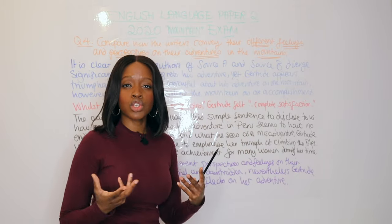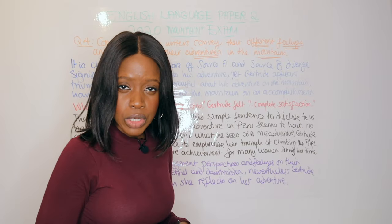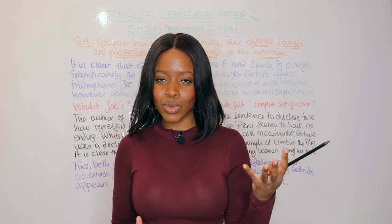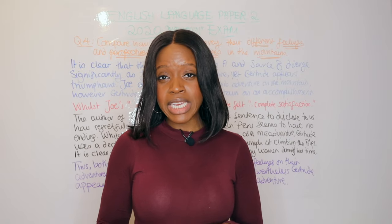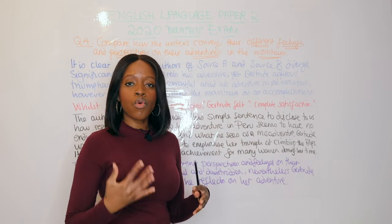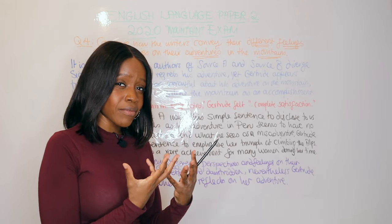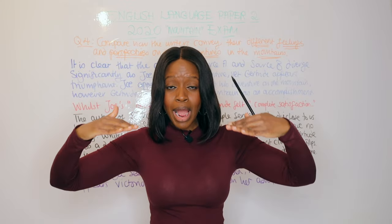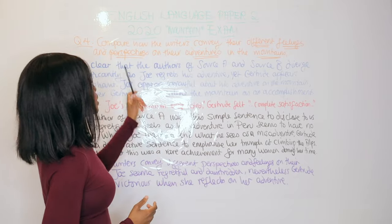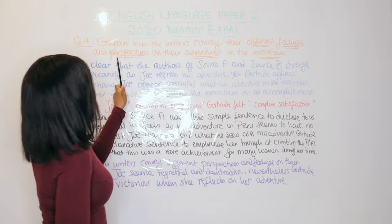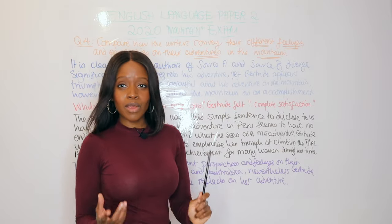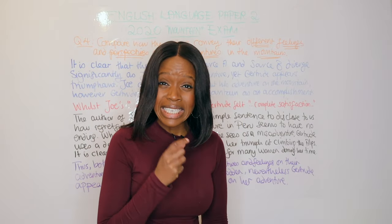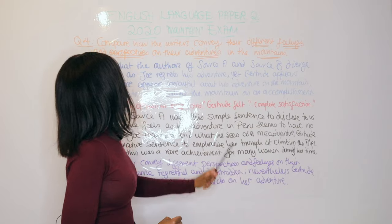We're going to look at how to write a full-mark, grade 9 response to question four of the 2020 mountains exam. This is the one where we've got Joe with his broken leg in source A, and Gertrude with her guide Marius in source B — the Victorian source. The question always asks you to compare both sources. The question is: 'Compare how the writers convey the different feelings and perspectives on the adventures on the mountains.' The keywords here are 'different' — you must focus on differences, not similarities — and 'feelings and perspectives' about adventures on the mountains.